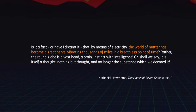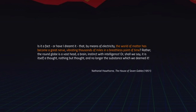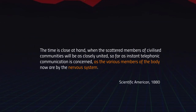That very same impulse, that same essential shift, is still unfolding. Here we have a Scientific American from the end of the 19th century pointing at the same phenomenon: 'When the time comes that the scattered members of civilized communities will be as closely united, so far as instant telephonic communication is concerned, as the various members of the body are by the nervous system.' So we have this notion of the unification of space and of beings in space globally — a global nervous system.